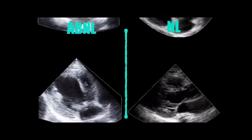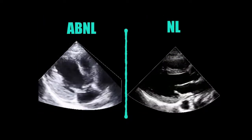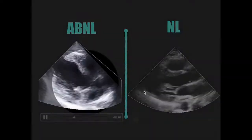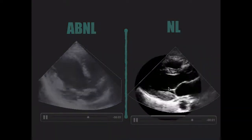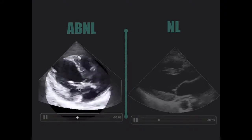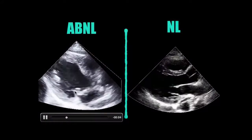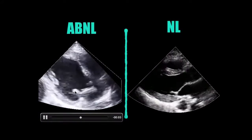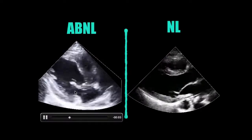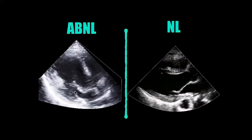This is a parasternal long axis view of that same patient that had mitral endocarditis. This is a normal mitral valve. This is an abnormal mitral valve — see how there's a bunch of goo on it? That's what endocarditis looks like. It's not that complicated: if you see a thickened, gooey, mobile mass on one of the valves, it's usually going to be endocarditis.